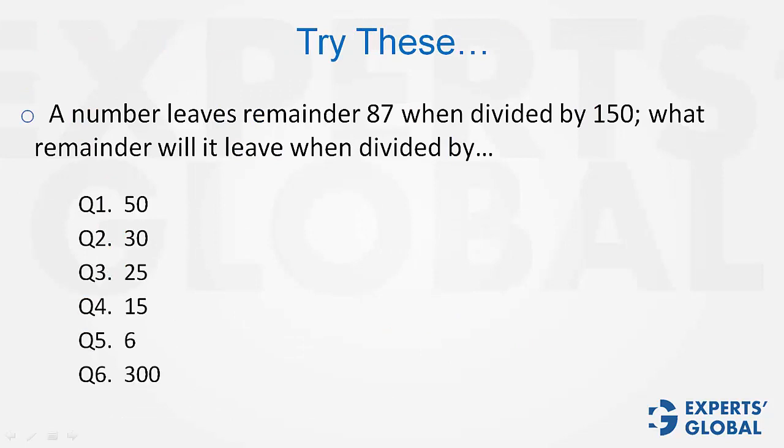The number is of the form 150K plus 87. With 50, this part will give 0, this part will give 37. So the answer is 37.